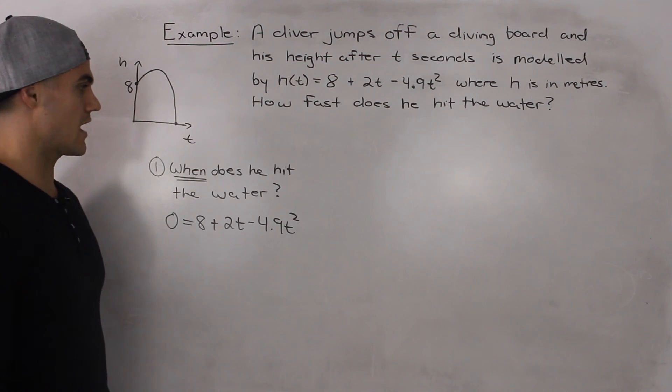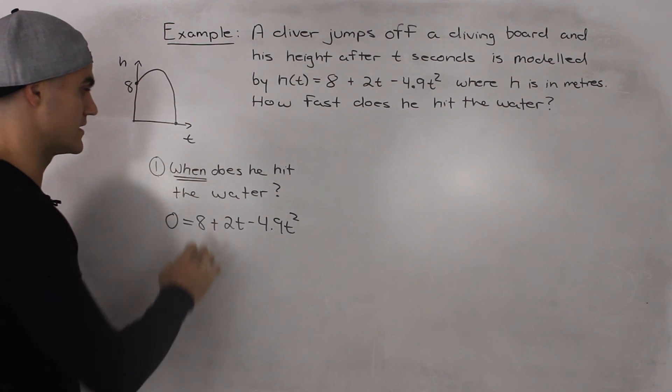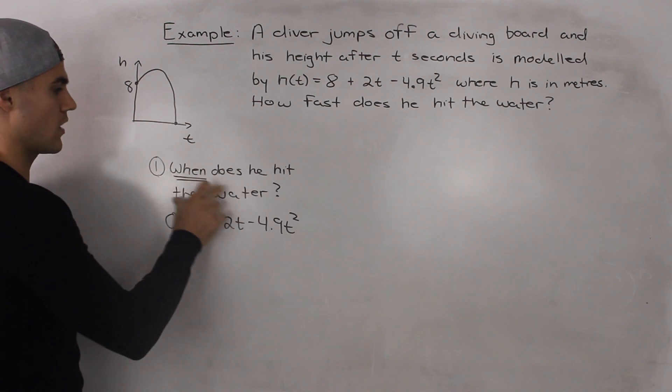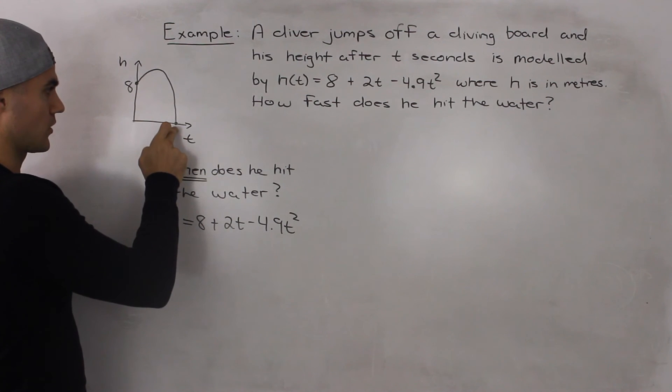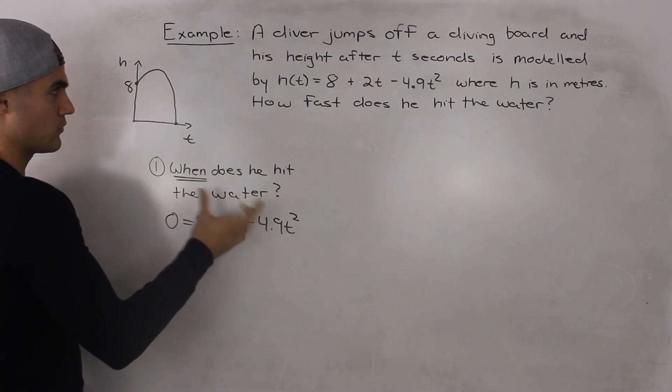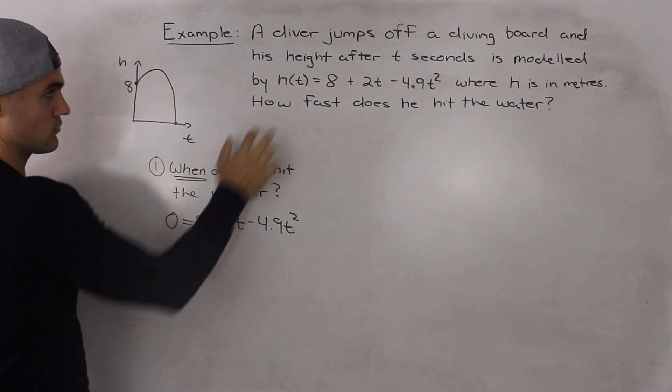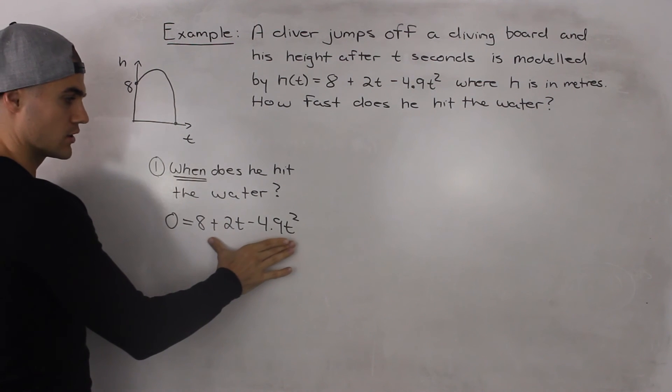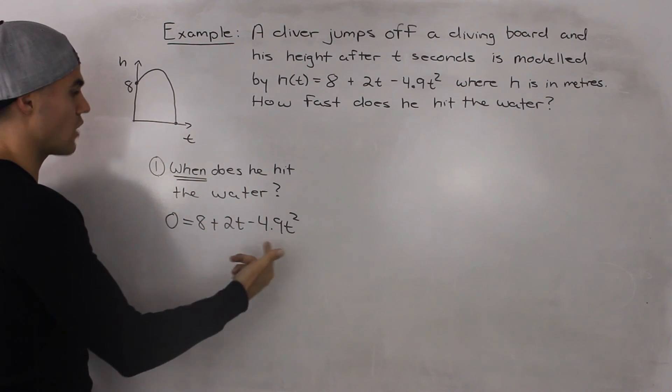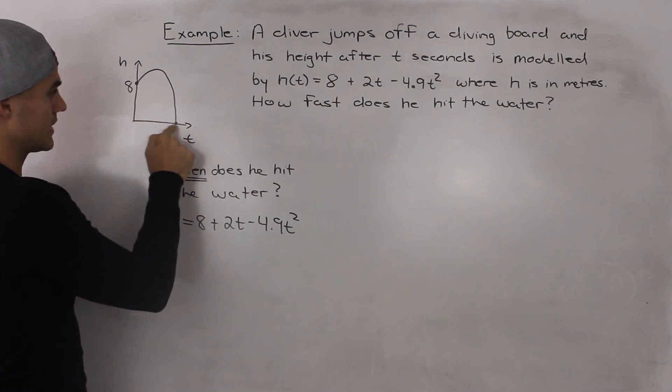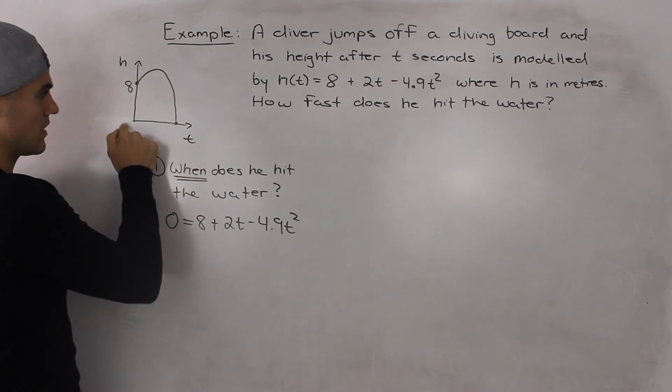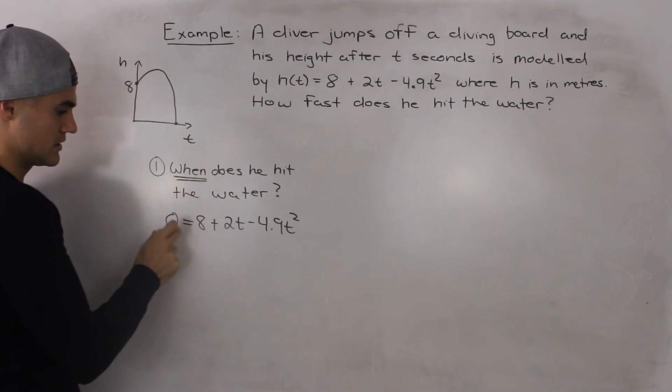So the first step, the first thing we have to figure out is when does he hit the water? When is this point occurring? And we figure that out by plugging in 0 for h into the equation and solving for t. Because when he's going to hit the water, the height above the water is going to be 0.